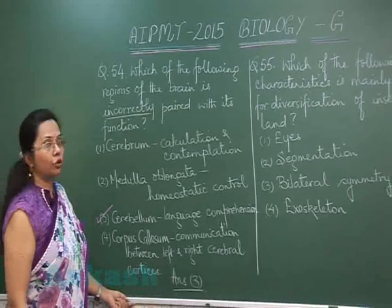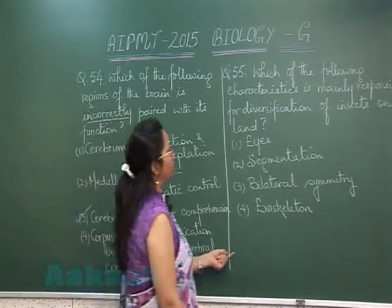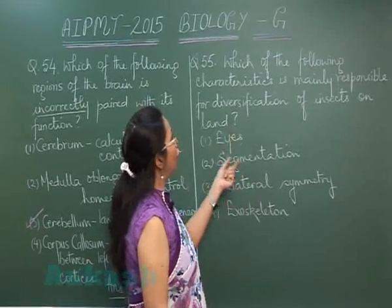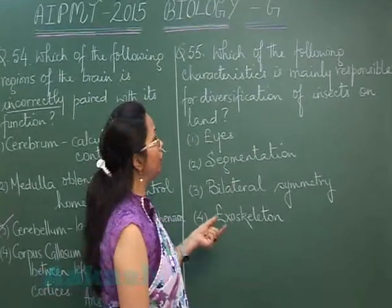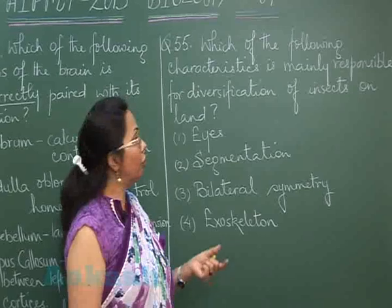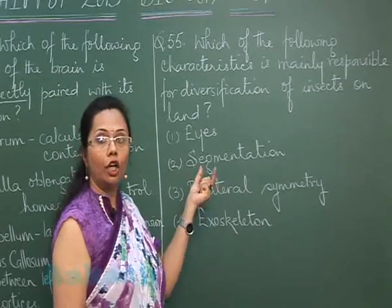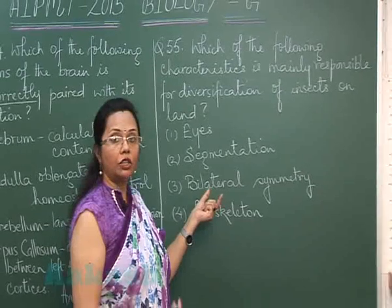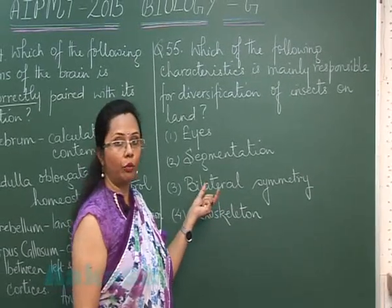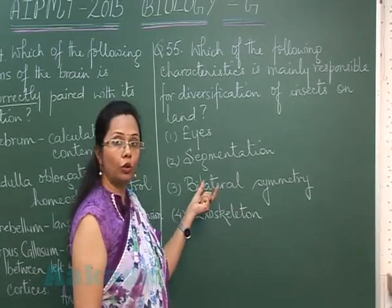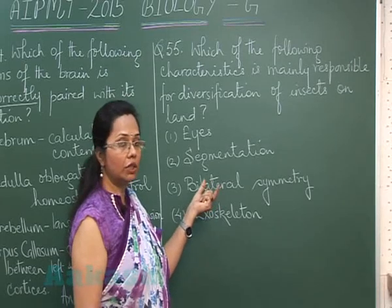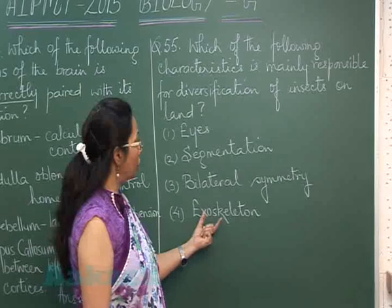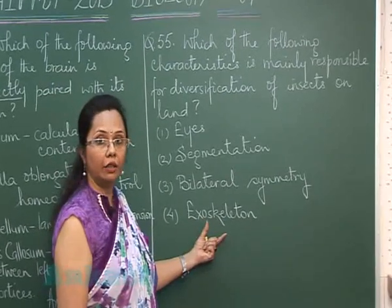Question 55: Which of the following characteristics is responsible for diversification of insects on land? Insects are the largest group — the largest phylum among animals is Arthropoda, and the largest class within that is Insecta.